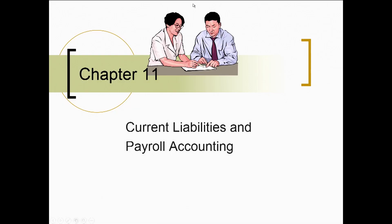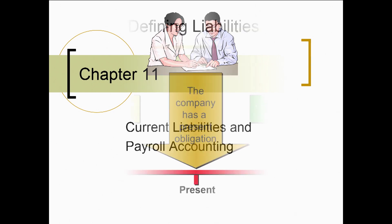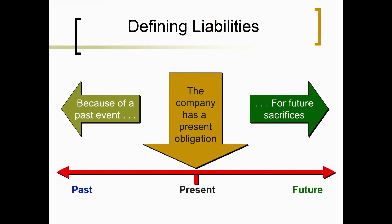Chapter 11 is over current liabilities and payroll accounting. A lot of this is going to seem really familiar because we've talked about current assets a lot. This will seem familiar especially when we get to short-term notes payable, because we just got done talking about short-term notes receivable. This is a way that they define liabilities — kind of a cute little way.